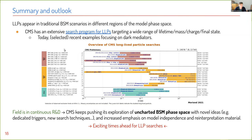In summary: LLPs appear in traditional BSM scenarios in various regions of model phase space. CMS has an extensive search program for LLPs targeting a wide range of lifetimes, masses, charges, and final states. Today I discussed examples focusing on dark mediators — CMS has many more searches and keeps pushing its exploration of uncharted BSM with novel ideas, dedicated triggers for Run 3, and new search techniques with increased emphasis on model independence and reinterpretation.